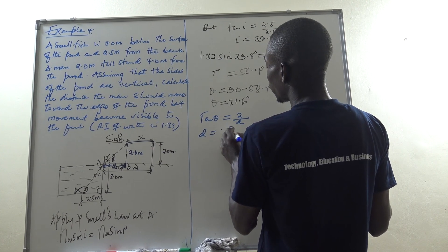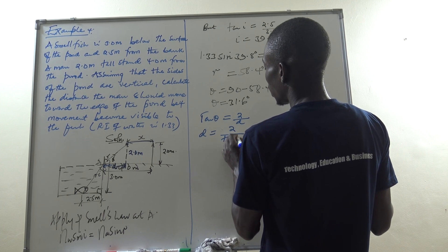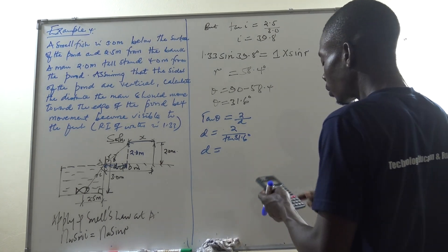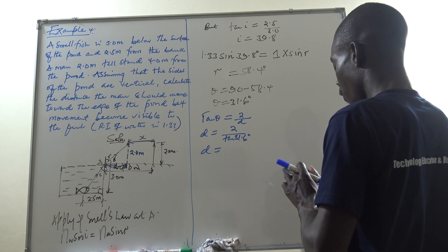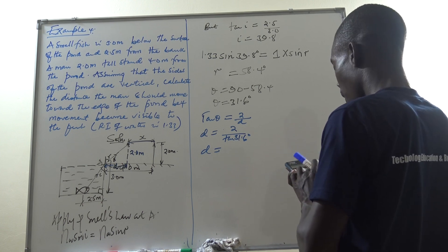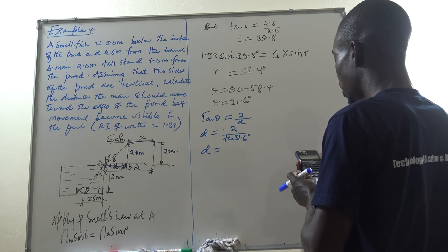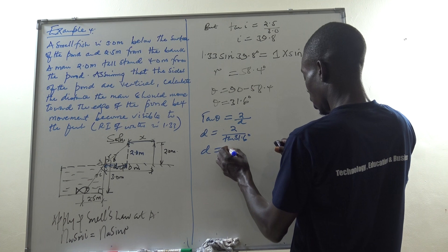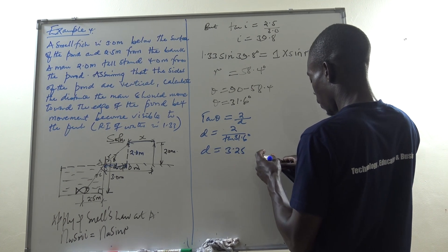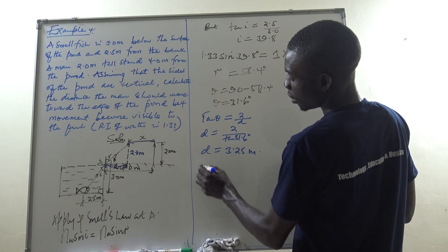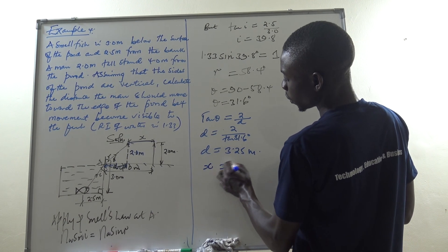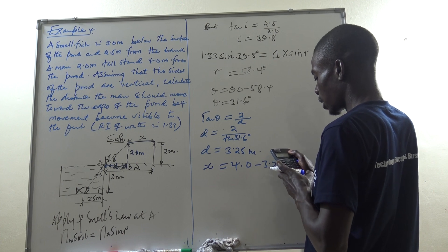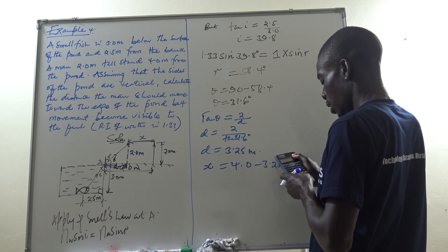I can say tan(theta) equals opposite over adjacent, where the opposite side is the man's height of 2.0 meters and the adjacent is D. So tan(31.6°) = 2.0 / D, which means D equals 2.0 divided by tan(31.6°). Calculating this: 2 divided by tan(31.6°) gives D equal to 3.25 meters.